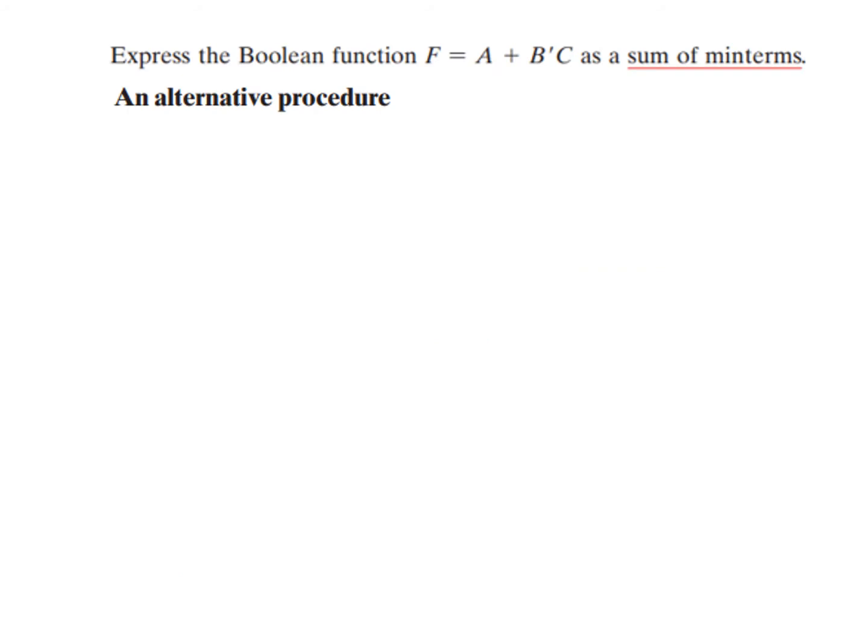Now there is an alternative way of solving the same problem. So let us see that. Same question. We find the or use the alternative procedure. We want to build a truth table for this, where F is equal to 1.